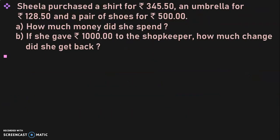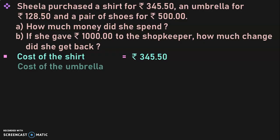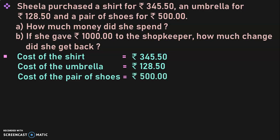Next sum: Sheila purchased a shirt for Rs. 345.50, an umbrella for Rs. 128.50, and a pair of shoes for Rs. 500. How much money did she spend? And if she gave Rs. 1,000 to the shopkeeper, how much did she get back? Write down the statements: cost of shirt = Rs. 345.50, cost of umbrella = Rs. 128.50, cost of shoes = Rs. 500. Total money spent equals the sum of all three amounts.